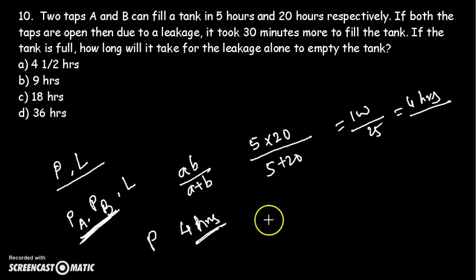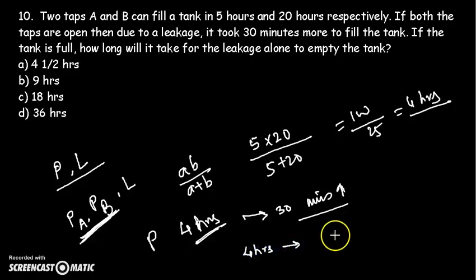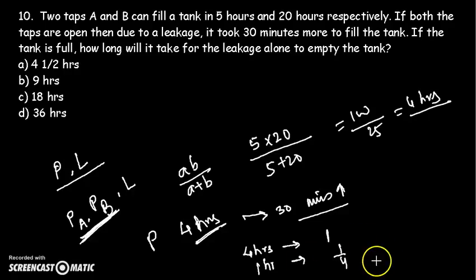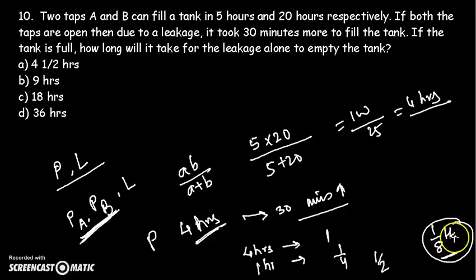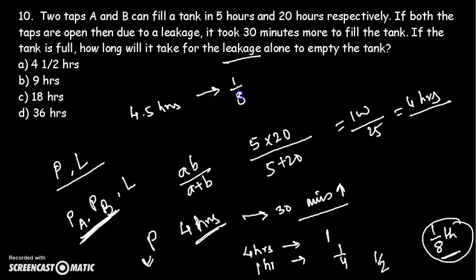So replace taps A and B with a pump that fills the tank in 4 hours. There is a leakage present and it takes 30 minutes extra, meaning it takes 4.5 hours total to fill the tank. In 4 hours the entire tank fills, so in 30 minutes (half an hour) the pump does 1/8 of the tank. This extra 1/8 portion is what the leakage alone drains out over 4.5 hours.